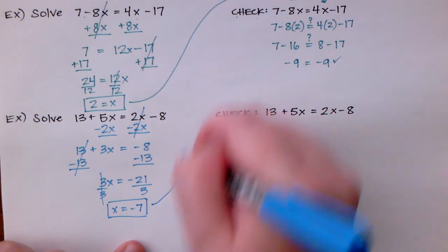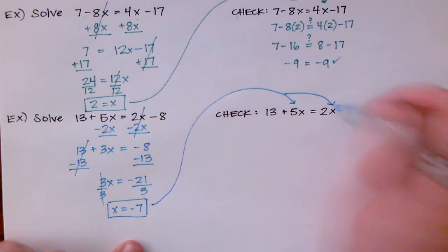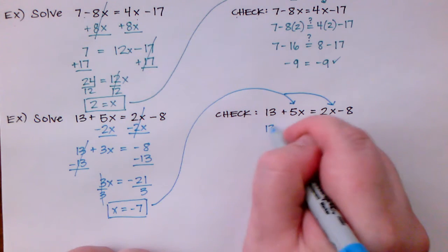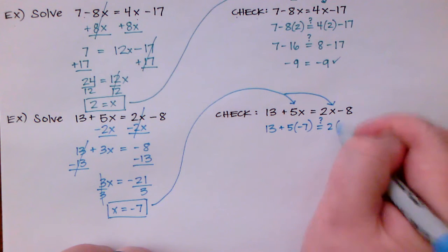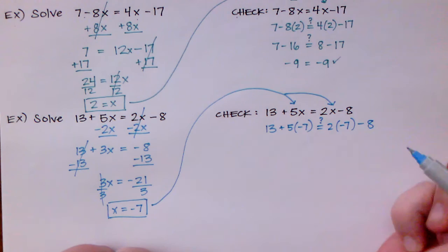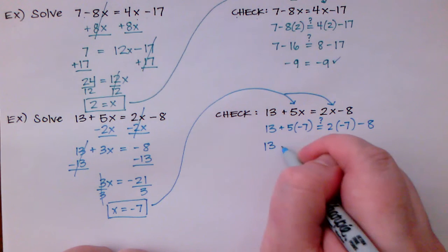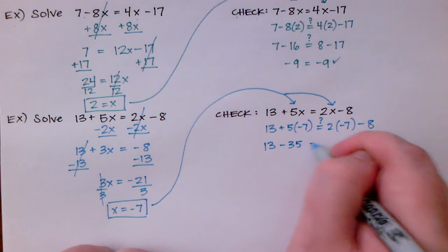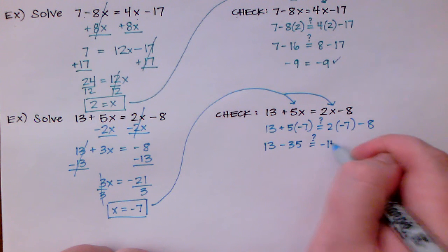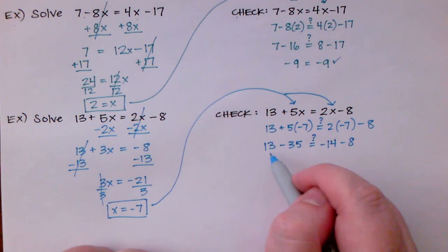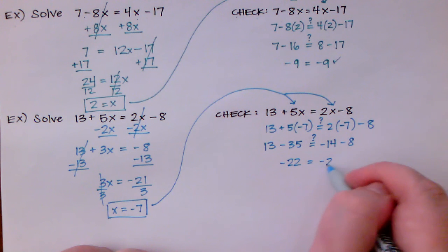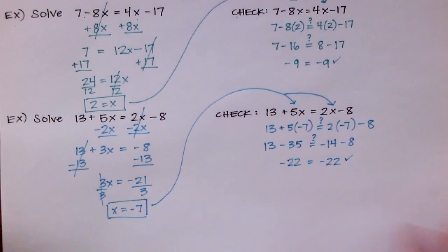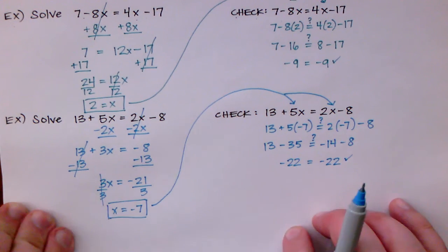All right let's see if that works out. Again I'm going to check it by plugging it in to both sides and seeing if the left side equals the right side. So 13 plus 5 times negative 7, does that equal 2 times negative 7 minus 8? This is the same as 13 minus 35. The right hand side is the same as negative 14 minus 8. So 13 minus 35 is negative 22 and the other side negative 14 minus 8 is also negative 22. So I'm done. I solved it. This is not that bad at all. So why don't we move on to another problem.